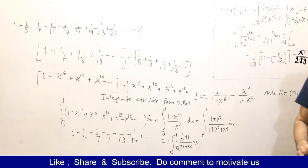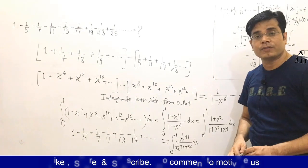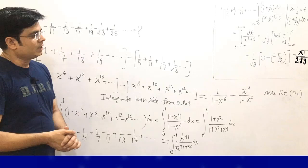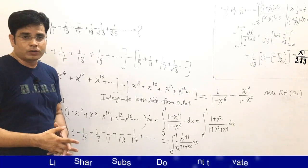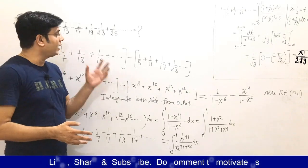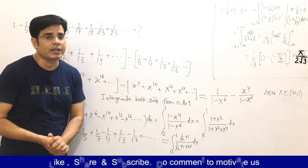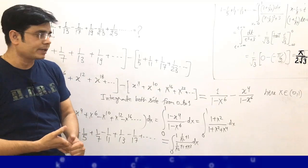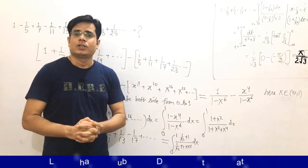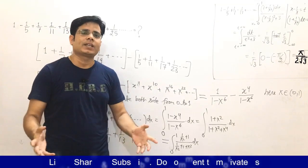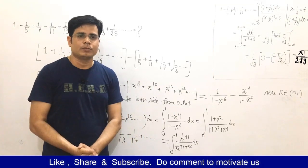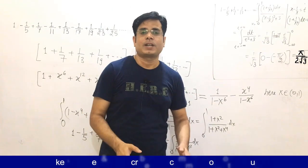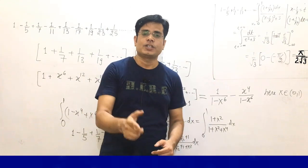So the sum of this infinite series is π/(2√3). We found the sum using integration. I hope you understand how this was done. See you in the next video — till then, goodbye! Don't forget to like, subscribe, and share this video.